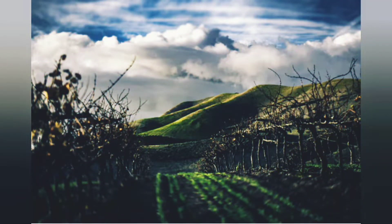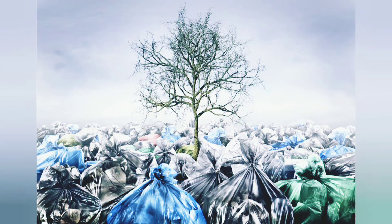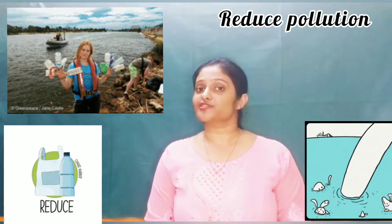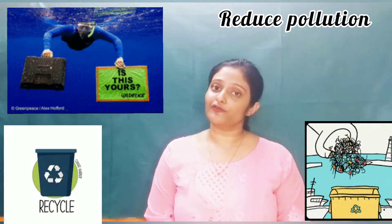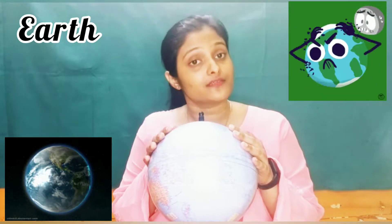Some forms of pollution can be seen, and some are invisible. Children, we should work to reduce pollution because this pollution is causing global warming. Our beautiful planet, the earth, is under threat. This threat is due to human activity that is threatening our own existence.